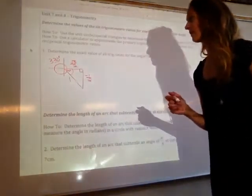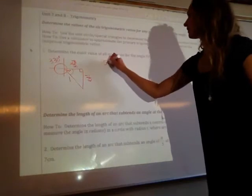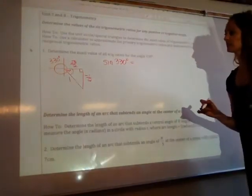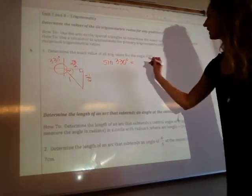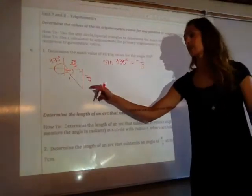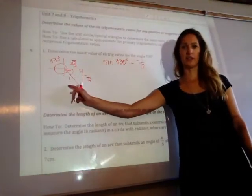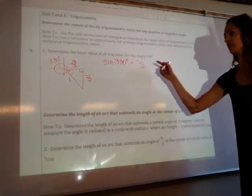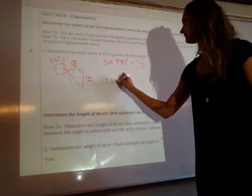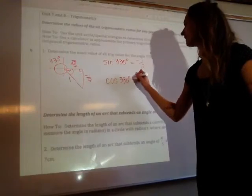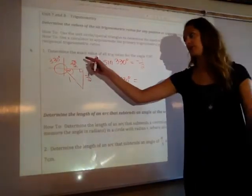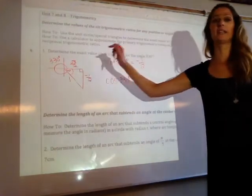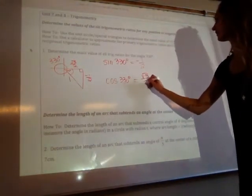So, what are the trig ratios for this? Sine 330 degrees is equal to the y value, so negative 1 half. On the unit circle it's opposite over hypotenuse, but because hypotenuse is always 1, we end up with negative 1 over 2, just the y coordinate. Now cosine 330 degrees is adjacent over hypotenuse, so root 3 over 2 over 1. But because it's over 1, we're just taking the x coordinate. So, root 3 over 2.